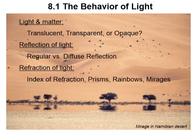Hello physical science students. In this video we are going to look at the behavior of light. We're going to talk about the difference between translucent, transparent, and opaque when it comes to interactions between light and matter. We're going to review reflection of light, the difference between regular and diffuse reflection, and look at the index of refraction and how refraction can explain the behavior of prisms, rainbows, and mirages.